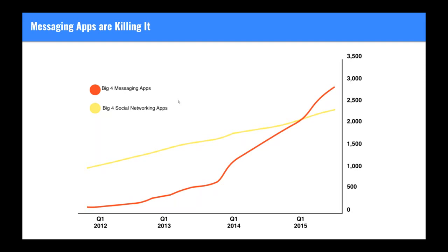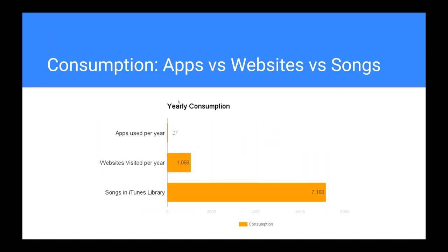The second big reason is app consumption. The average person uses about 27 different apps throughout the year, but visits over a thousand websites and has over 7,000 songs in their iTunes library. Apps don't have a long tail effect — there's no money in it for businesses or developers. In fact, your grandmother is more likely to make a trinket and sell it on Amazon and make money than a developer making an app and monetizing it.